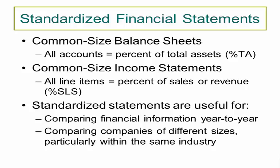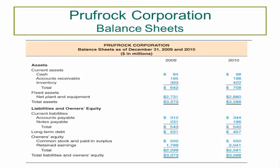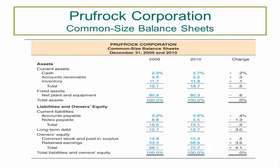Now let's switch to the Prufrock Balance Sheet. This is a regular balance sheet that has not yet been standardized. It gives you information for both 2009 and 2010. Pay special attention to the total assets numbers at 3,373 and 3,588. As you can see in the common size balance sheet that has been standardized, we now get everything as a percentage of total assets. Total assets will be 100%, and because total liabilities and owner's equity equals total assets, they'll be 100% as well. This allows us to make more comparisons over time and see what's really going on between the categories.